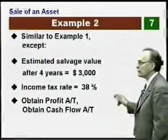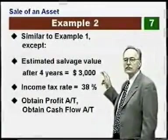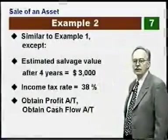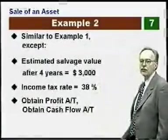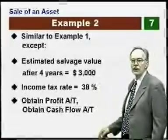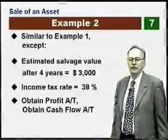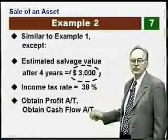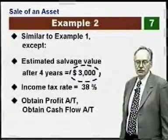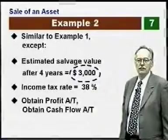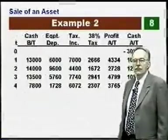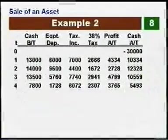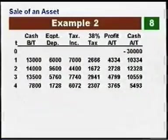Now let's look at example two. This is similar to example one, with an important difference: we're anticipating a salvage value of $3,000. The income tax rate is the same, and we'll obtain profit after tax and cash flow after tax the same way. The $3,000 salvage value is considerably less than the book value when we sell the asset, and that's going to lead to a taxable loss. The first part of the table — equipment depreciation — follows the same pattern as before.